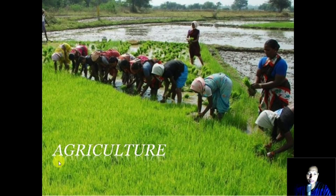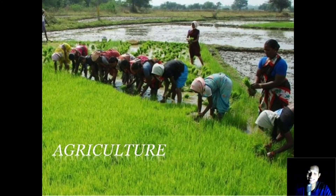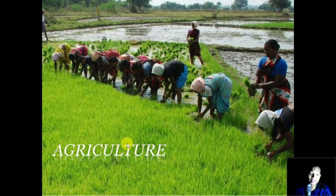Agriculture is a primary activity which produces most of the food that we consume every day. Do you know why agriculture is an important part of India? It is because two-thirds of India's population is engaged in agriculture. Such a primary part of the country must be known to us all. This chapter will help us enhance our understanding of various crops and also the farmers' struggles.